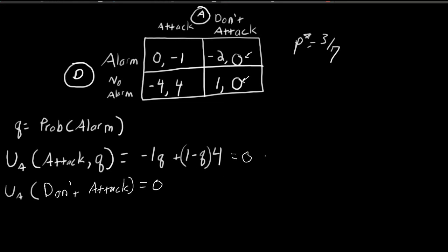We can go ahead and solve this. This implies that negative 5Q plus 4 equals zero, which implies Q* equals 4 over 5. So we have solved for the Nash equilibrium of this game. When the attacker randomizes by attacking 3/7ths of the time and not attacking 4/7ths of the time, and the defender randomizes by sounding an alarm 4/5ths of the time but not sounding an alarm 1/5th of the time, we are at a mixed strategy Nash equilibrium.